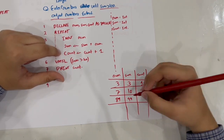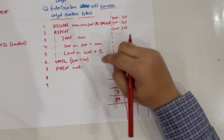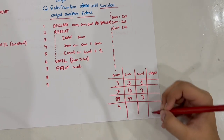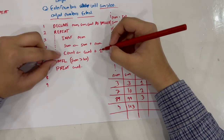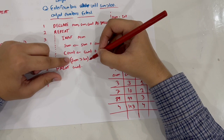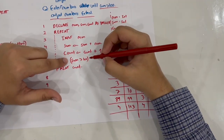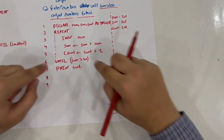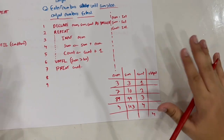Sum is 99 — is it greater than 100? No, so we repeat again. Let's enter 4. Now sum is 103 and count is 4. Sum is now greater than 100, so the condition is true on the fourth iteration. The loop breaks and we proceed to 'print count', outputting 4. Trace table complete.